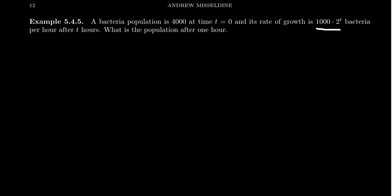And that actually increases by the hour as well. So this is our population. If population is n of t, this is our derivative: 1000 times 2 to the t.